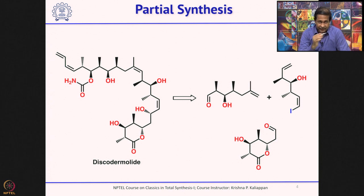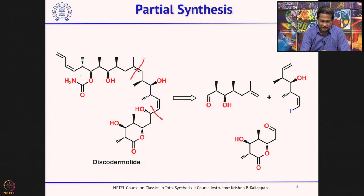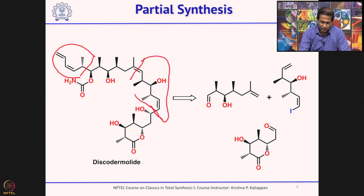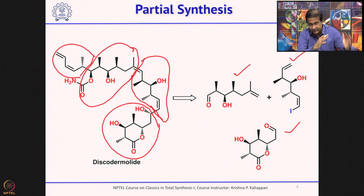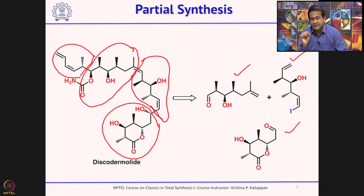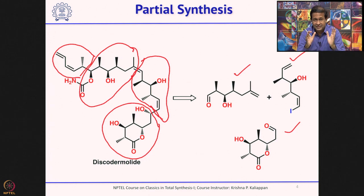Here, for example, an anti-cancer agent called discodermolide has four fragments - I have shown three here. If you can disconnect here, here, and here, then this is one fragment, this is one fragment, this is one fragment, and there is the fourth fragment on the left-hand side. So if you report the synthesis of any of these four fragments, you can claim that it is a partial synthesis of discodermolide. You also have to mention the fragment - C1 to C12, C12 to C14, whatever the number - and then you can claim that it is a partial synthesis of that natural product.